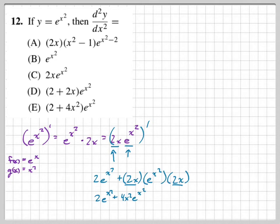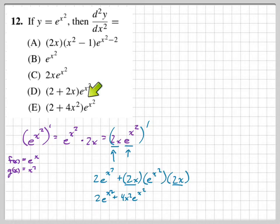Now the answer choices probably don't look exactly like this. They likely factor out a common factor — e to the x squared. Factoring that out gives us e to the x squared times the quantity 2 plus 4x squared, which matches answer choice E.